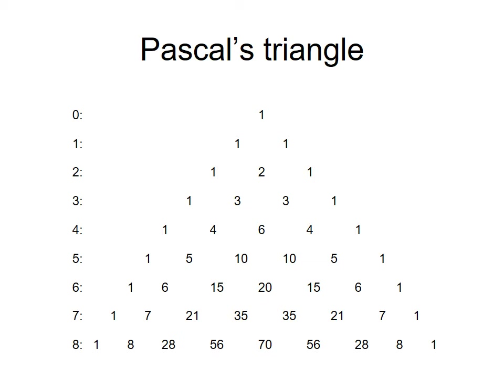Pascal's triangle is a way to get the binomial coefficients quickly. For row four: 4 choose 0 is 1, 4 choose 1 is 4, 4 choose 2 is 6, 4 choose 3 is 4, 4 choose 4 is 1. The n value is on the left column, and as you go across it shows how many combinations you can choose out of n.